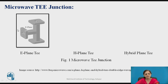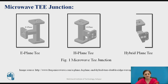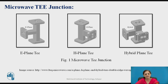The first figure shows E-plane T-junction where the side arm is connected to the wider portion of the main waveguide. Whereas in H-plane T-junction, the side arm is connected to the narrower portion of the main waveguide. It is also known as the H-arm. The combination of both E-plane T-junction and H-plane T-junction is nothing but the hybrid plane T-junction or magic T-junction.